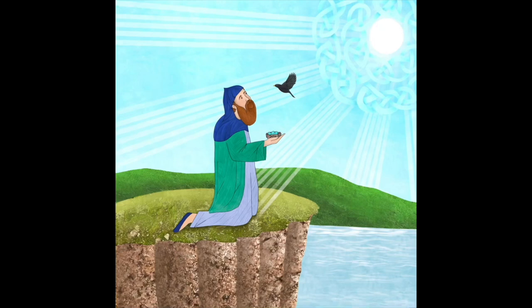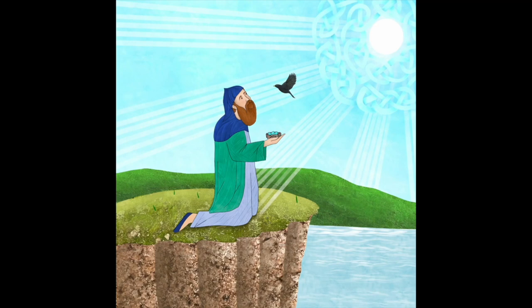Because St. Kevin loved the bird and didn't want to disturb the eggs, he stayed very still until the eggs hatched and the baby birds were able to leave the nest. During this time the blackbird brought St. Kevin nuts and berries to eat.